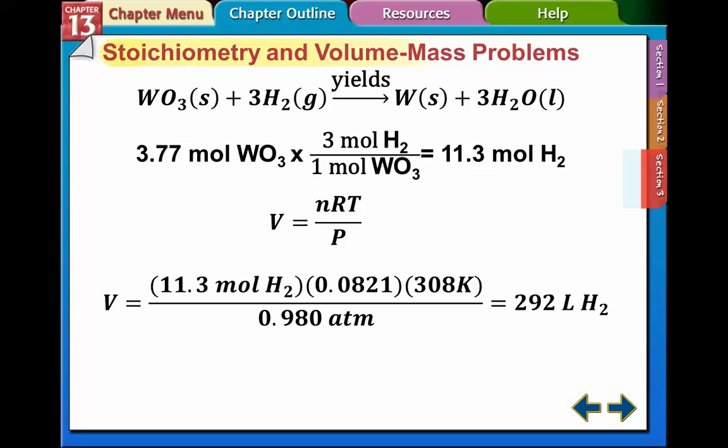So we plug in all these numbers. We got the moles of hydrogen that goes here, that's my n, the moles of hydrogen. The R is the 0.0821, the temperature in Kelvin, the pressure in atmospheres. So we multiply everything on the top, divide by our number on the bottom, and we get 292 liters of H2.